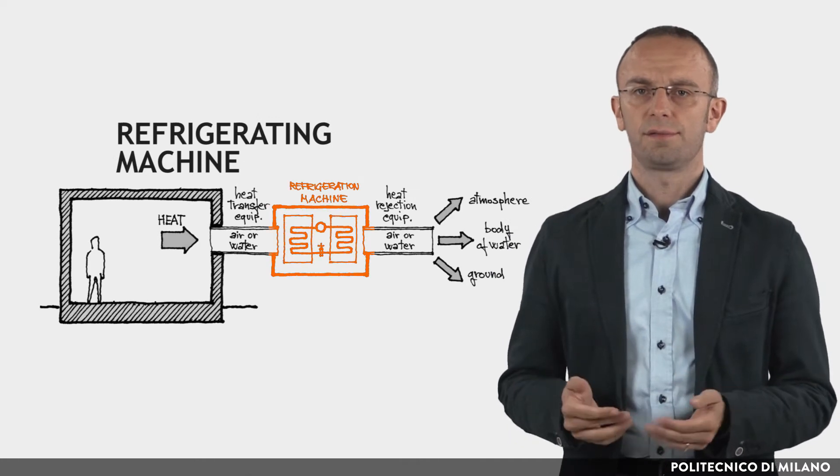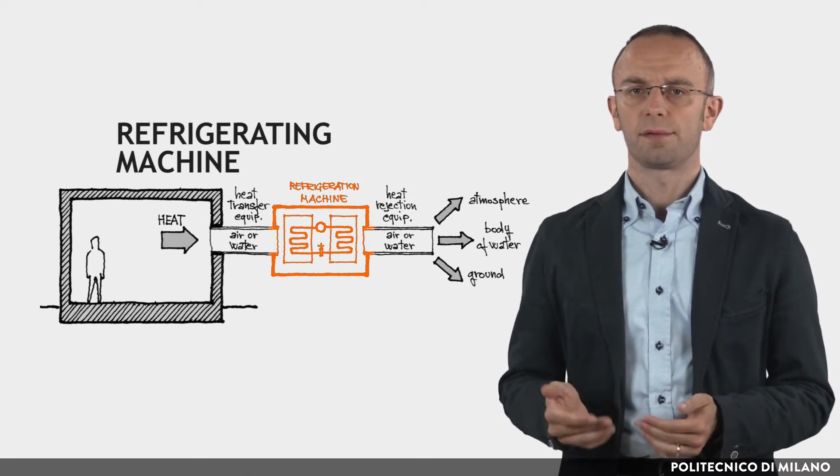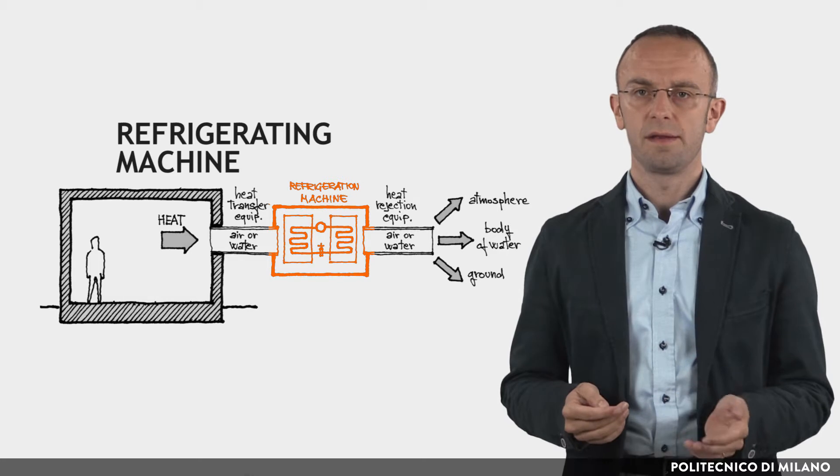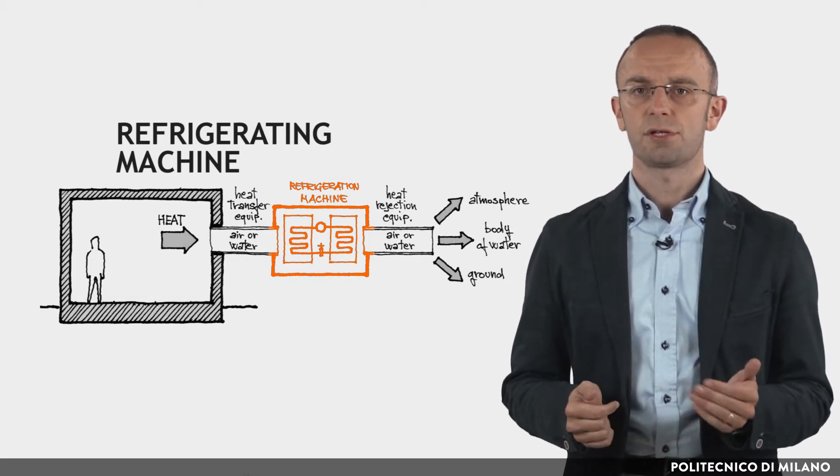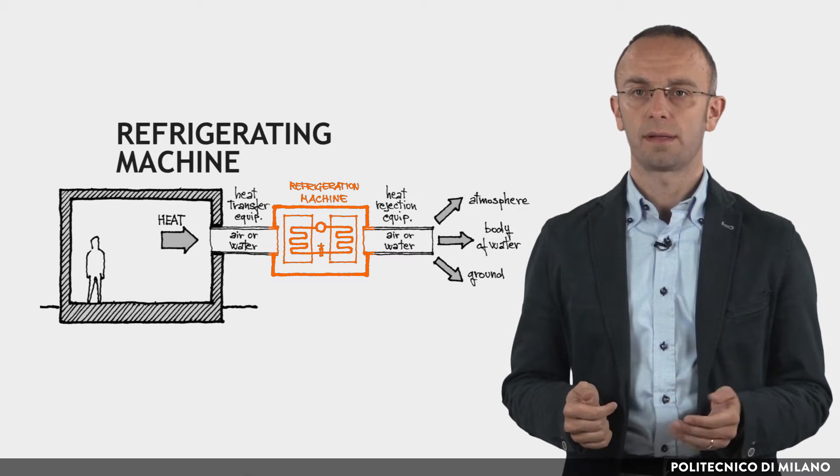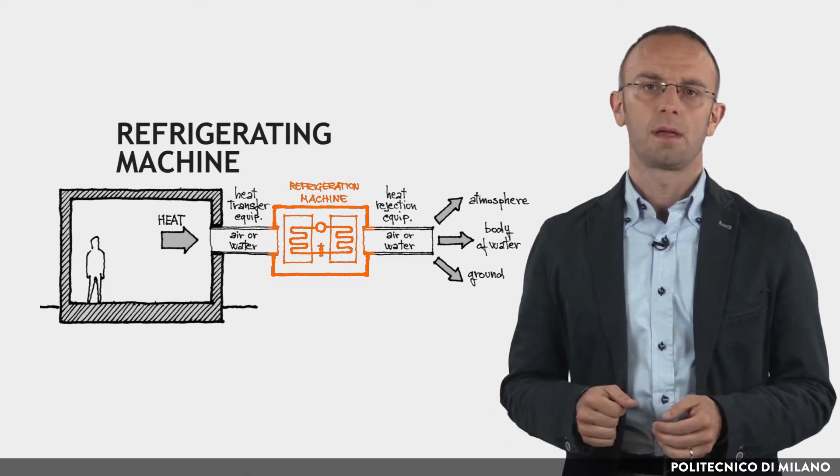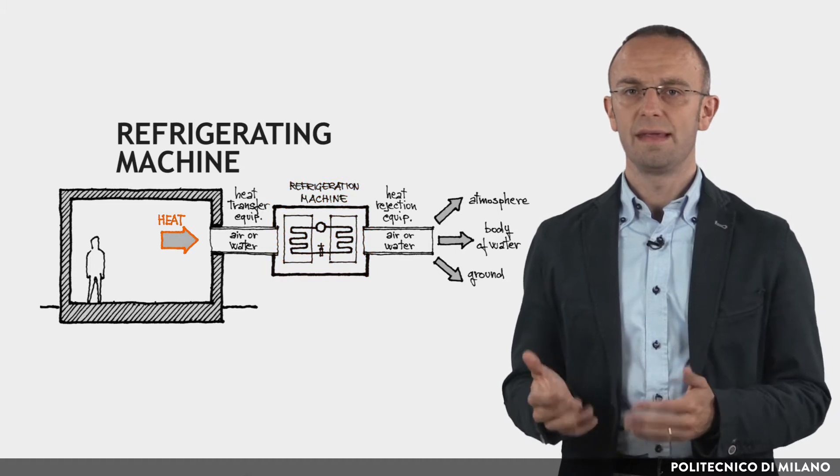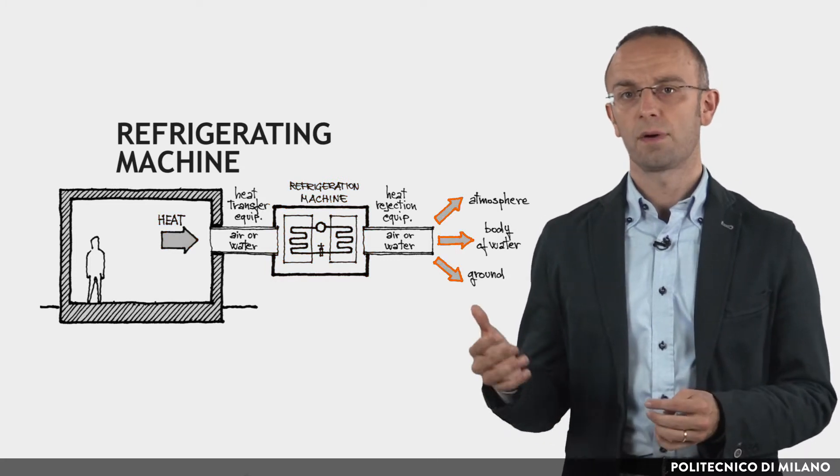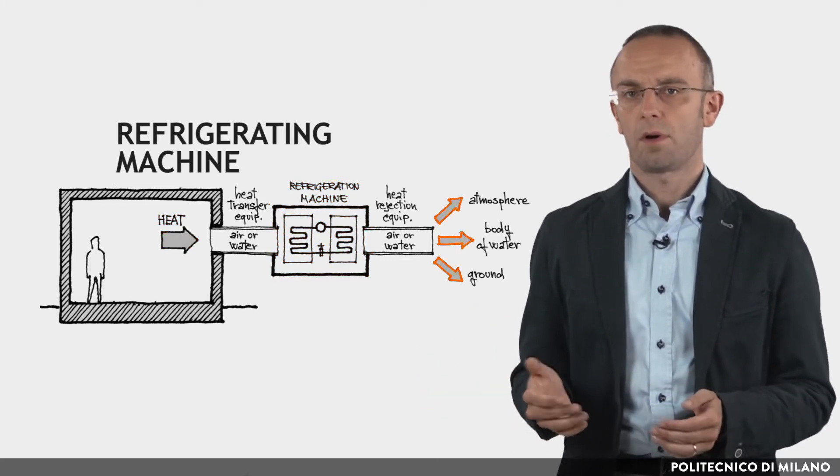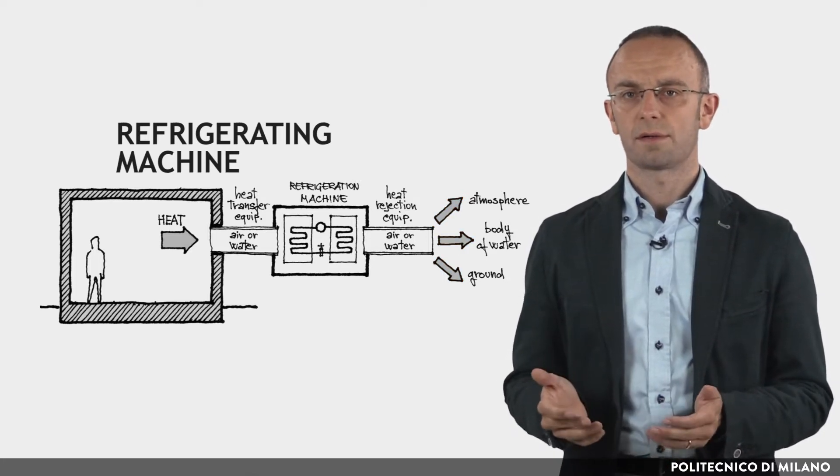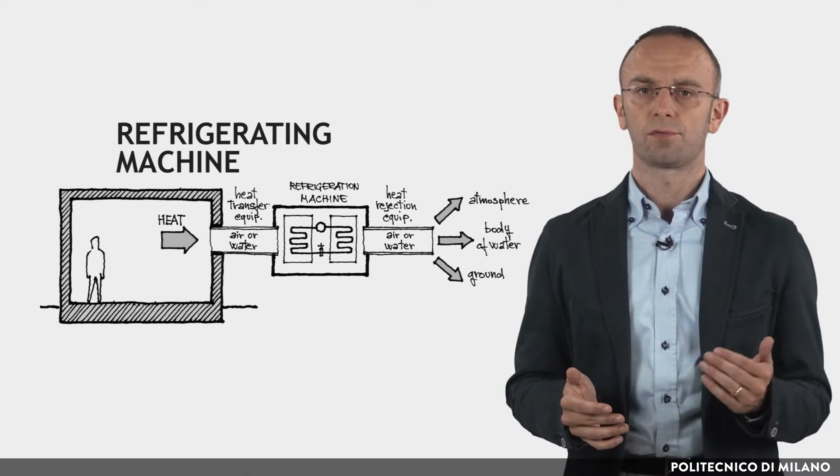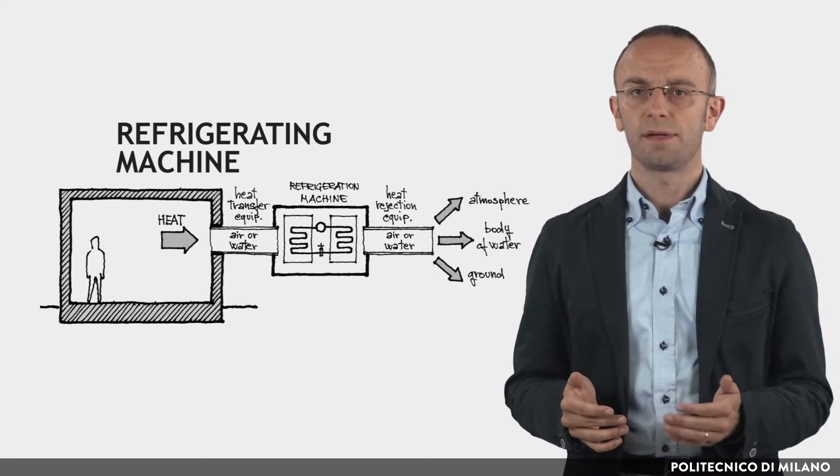The refrigeration machine is the basis of the ordinary domestic refrigerator, extracting heat from an insulated box at a low temperature and exchanging it with the surrounding environment at a higher temperature. The same process can be used to extract heat from a room and release it into external air, the ground or a river. In the heat pump mode, the process is simply inverted and heat is extracted from the surrounding environment and transmitted to the building.